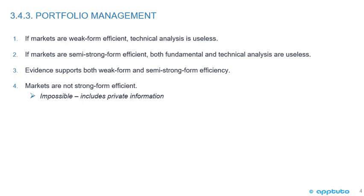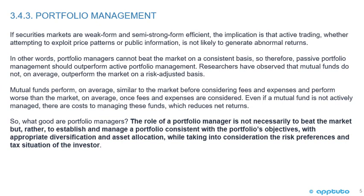Evidence supports both weak form and semi-strong form efficiency. Markets are not strong form efficient, and that's impossible because it includes private information. If security markets are weak form and semi-strong form efficient, the implication is that active trading — whether attempting to exploit price patterns or public information — is not likely to generate abnormal returns.